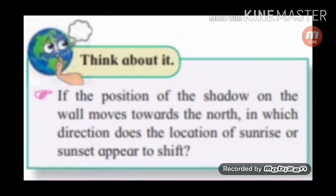Think about it: if the position of the shadow on the wall moves towards the north, in which direction does the location of sunrise or sunset appear to shift? The second half of this lesson will be in chapter 8, and it should be handled in the class around the 22nd of December. Before that, record the observations as explained.